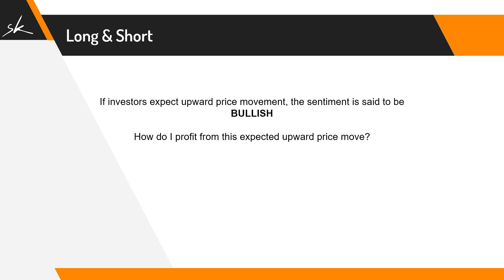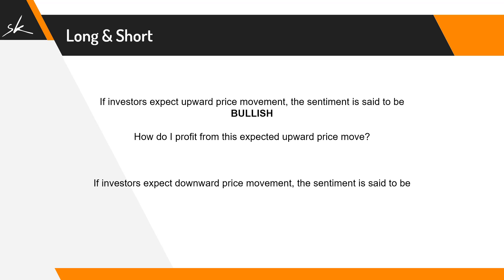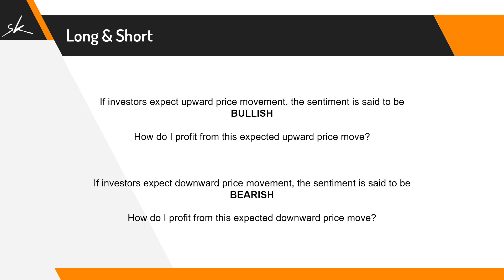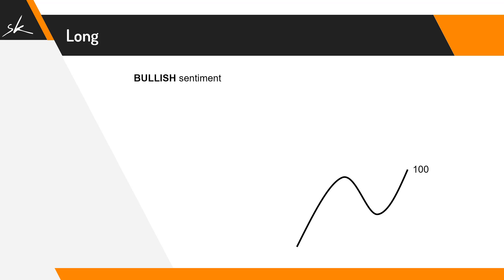So the question is: how do I profit from this expected upward price move? If an investor expects downward price movement, the sentiment is said to be bearish. But how do I profit from this expected downward price move? Let's start with an example of bullish sentiment — bullish basically means I'm expecting prices to move up.